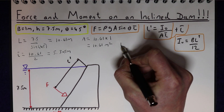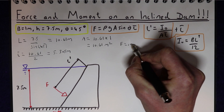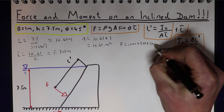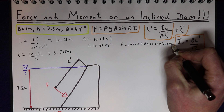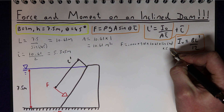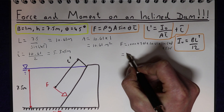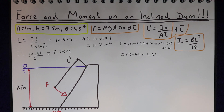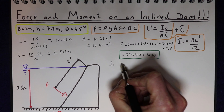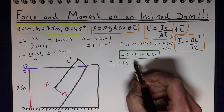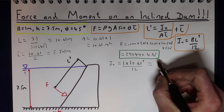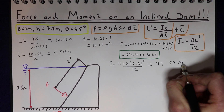Now we can work out the total force: F = ρ_water × g × A × sinθ × L̄ = 1000 × 9.81 × 10.61 × sin45° × 5.305, giving approximately 390,440 N. Before working out its location we need the second moment of area: I = B·L³/12 = 1 × 10.61³ / 12 = 99.53 m⁴.